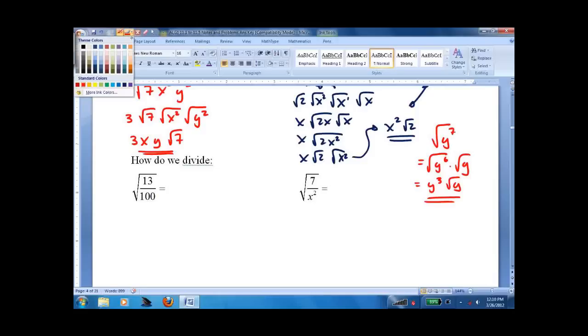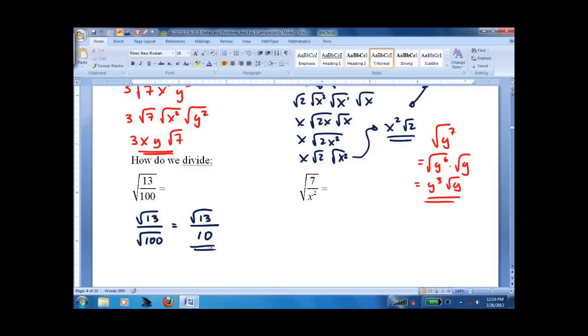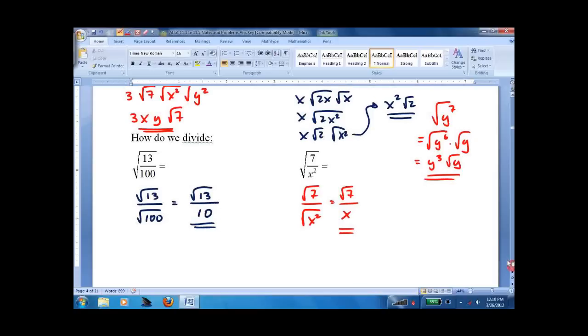Now how do we divide? Well we're able to break the things we multiplied, we can also just break the things that we divide. The same as doing this. The top has no perfect one that goes in, the bottom is 10, we're done. Try this one on your own if you want it's pretty simple. Just root 7 over x, and that's about it.